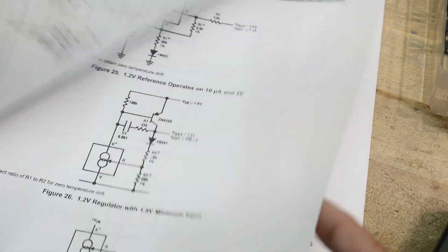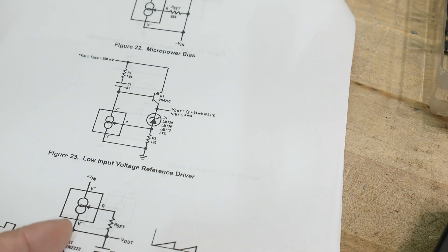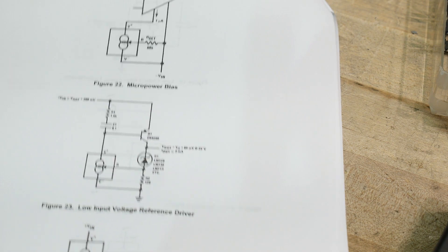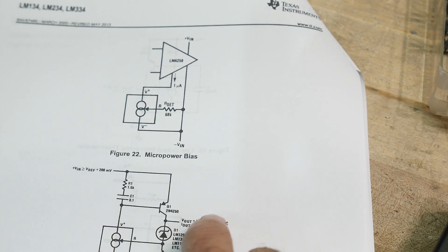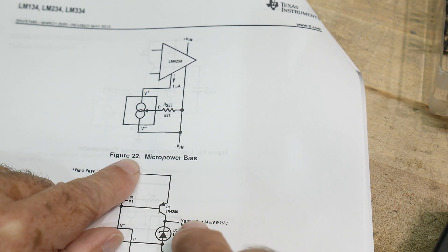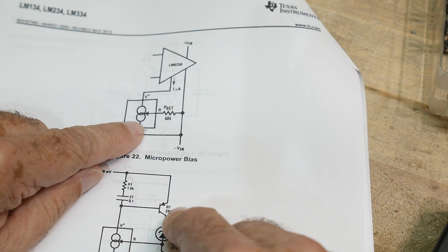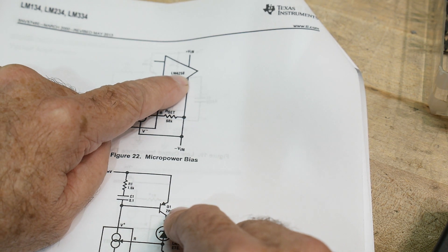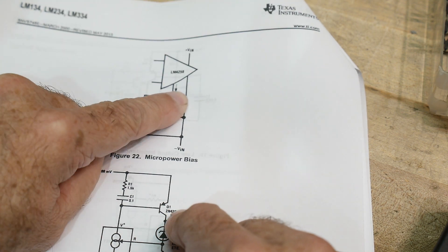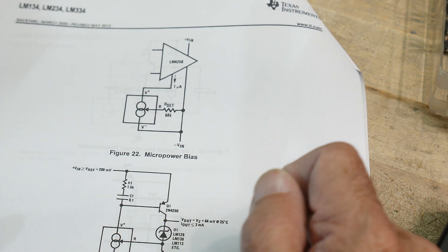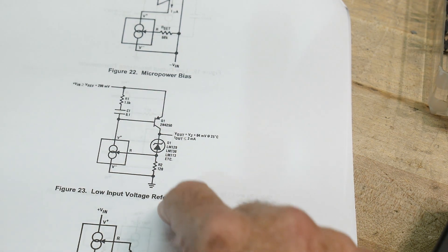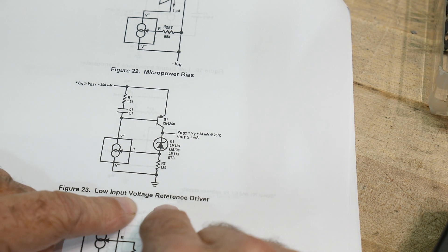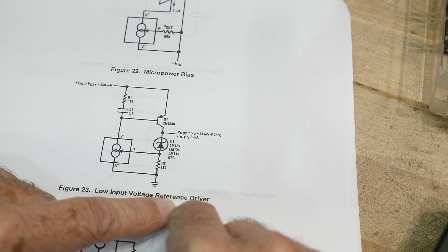Let's see. And there's quite a few applications in this data sheet. Here's a micropower bias. Okay. Here we need to have an LM4255 have one microamp of current going in. Let's see here. Low input voltage reference driver. All right.